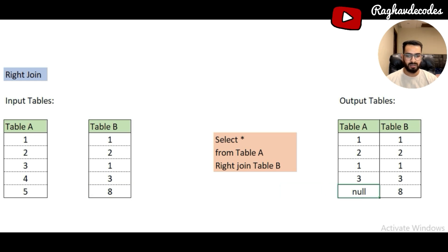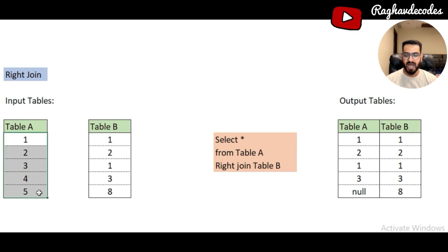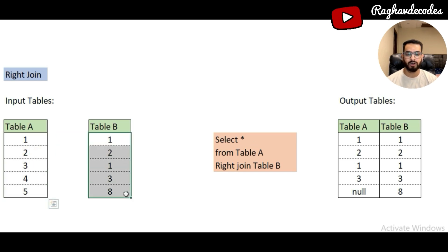And 8 in Table B does not have any matching record in Table A, so we get null there. One important thing to note: explosion only happens when there is a duplication on the joined table. Here we didn't have any duplication on the joined table, so in this particular case the explosion did not happen, and we got all records of the right table without any explosion.